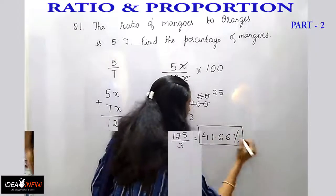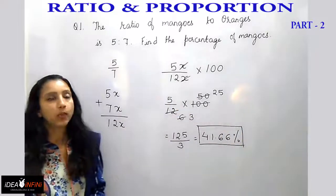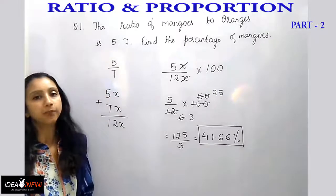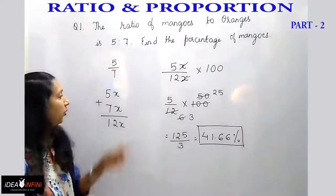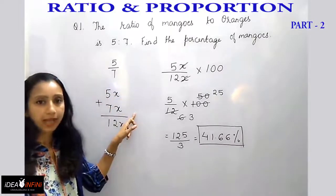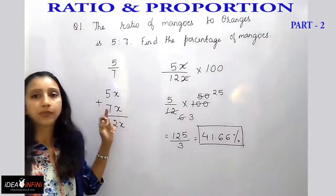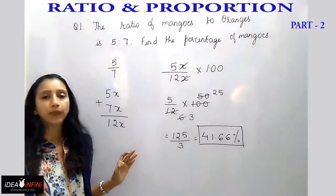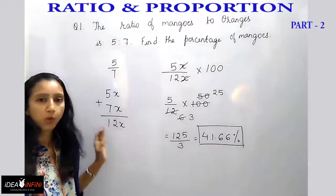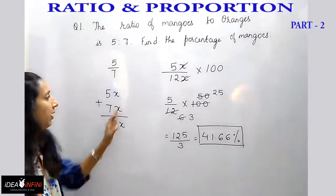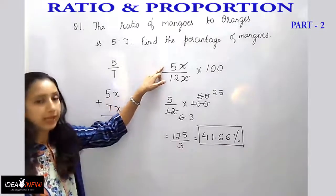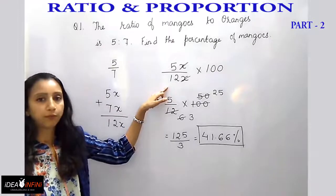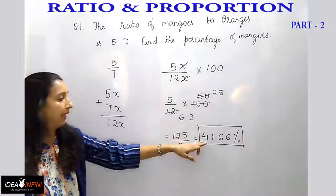To recap the method: when the ratio is given, you don't know the exact quantity, so you write 5x and 7x, where x is the multiple. It won't matter whether x is 1, 2, or 3. Then 5x, the number of mangoes, divided by the total number of fruits, multiplied by 100, gives you the percentage of mangoes.